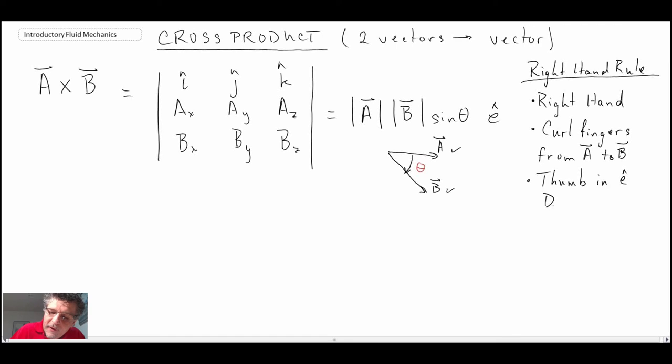And in the picture, curl your fingers from a to b, and your thumb is going to point in the direction of e. I'm sure you've seen this in physics. But that is how to determine the direction of e that comes out of our cross-product equation.